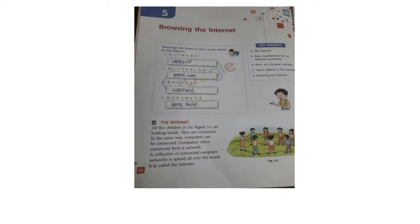Browsing the internet, title: lesson number five, page number 54. Take your computer science textbook, children. On the top we have some words to arrange. The first word is 'website,' the second word is 'hyperlink,' the third one is 'web page,' the fourth one is 'home page,' and the fifth is 'internet.'